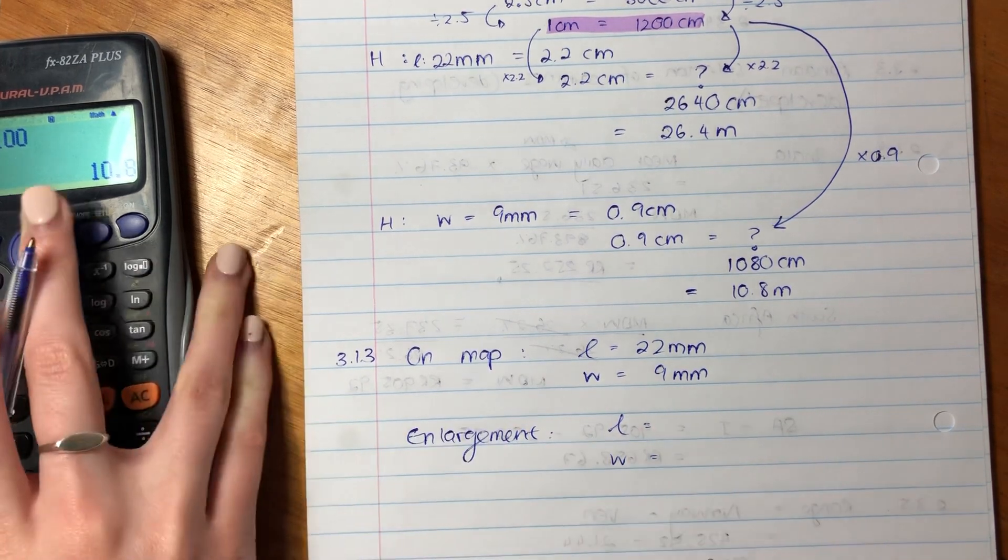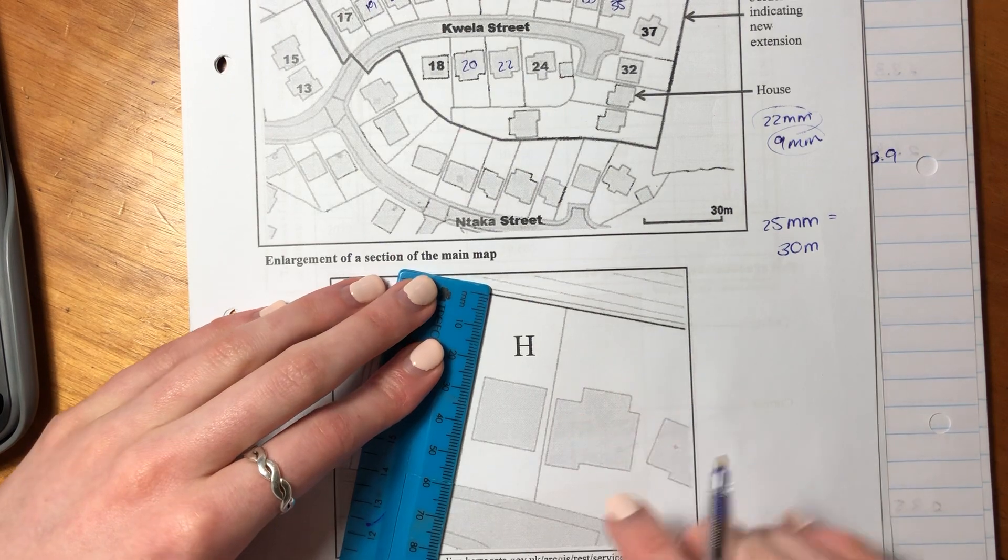So we know that on the map we had the length equaling 22 millimeters and we had the width equaling 9 millimeters. So let's see what it is on the enlargement. So we want the length again and we want the width. Let's get our ruler. My very broken ruler. So our length is 60 millimeters, 60 millimeters. And our width is 26 millimeters.